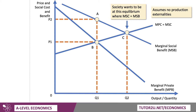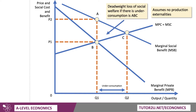I've labelled that point C. So in the absence of government intervention, the free market, with agents only thinking about their own private self-interest, may tend to underconsume, and therefore society might underproduce these things. And that is a market failure — a misallocation of scarce resources; it's allocatively inefficient from a social point of view. The deadweight welfare loss of social welfare, if there is underconsumption, is the area A, B, C.